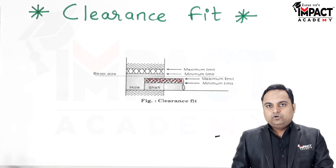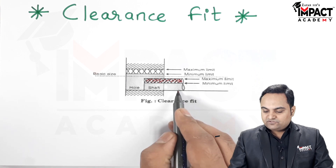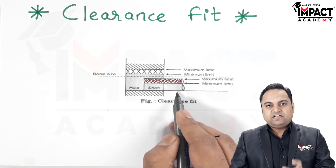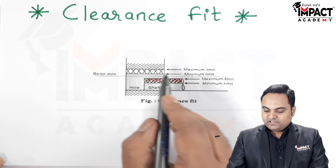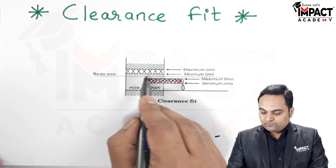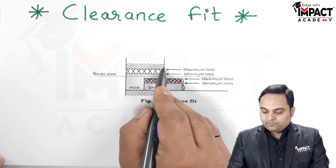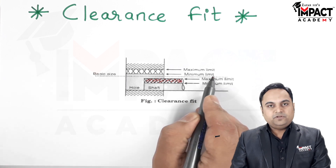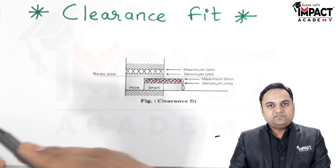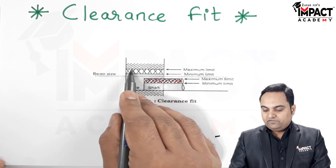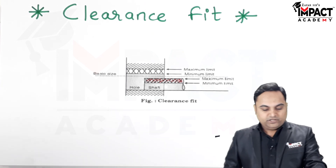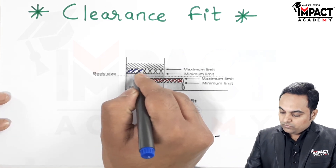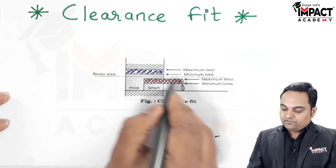The hole and shaft are exactly opposite to one another. For a shaft, where the material is minimum, the size of the shaft is minimum. For a hole, where the maximum material is present, it is called the minimum limit, and when material is removed, we get the maximum limit for the hole.